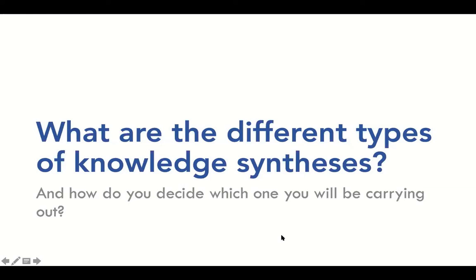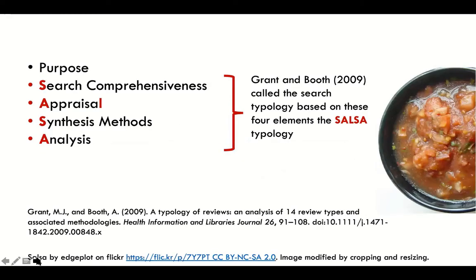I've alluded to a few types of knowledge synthesis. I've mentioned systematic and scoping reviews as well as meta-analyses. What are these, and how will you decide which one you and your team will be carrying out? There are a few signal studies or foundational studies that information professionals look at. One of them is the Grant and Booth study — a typology of reviews that looks at 14 different review types.